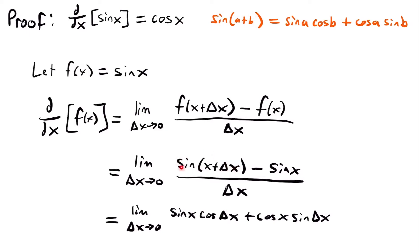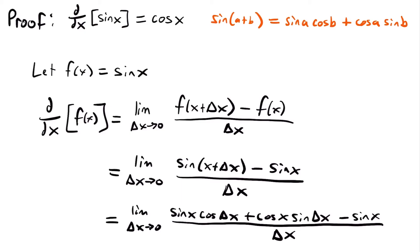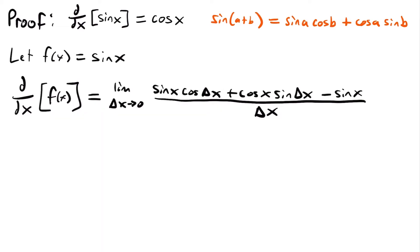We rewrote the sine of x plus delta x term using the identity, but we still need to subtract sine x. So we have minus sine x, all divided by delta x. Now if we clean up our work and move to the next step, we can rearrange the terms — moving the middle term to the front and the front term to the middle.